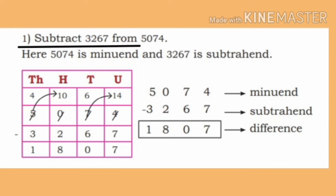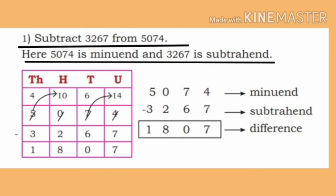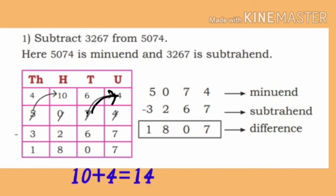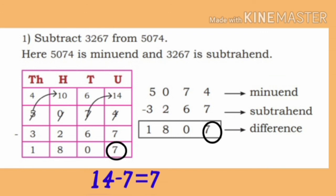Observe the third example, children. Subtract 3,267 from 5,074. Here, 5,074 is the Minuend and 3,267 is the Subtrahend. Let us find the difference. In the Minuend, we have 4 in the units place. It is not possible to subtract 7 from 4. So borrow 1 ten from the tens place and add: 10 plus 4 is 14 units. On subtracting 7 from 14, we get 7 in the units place.